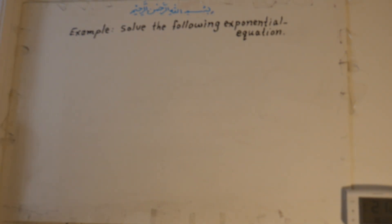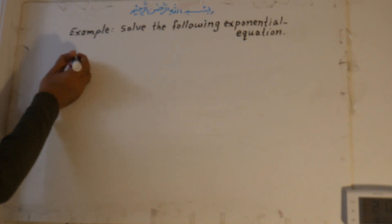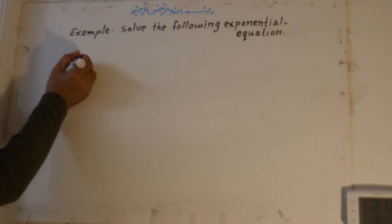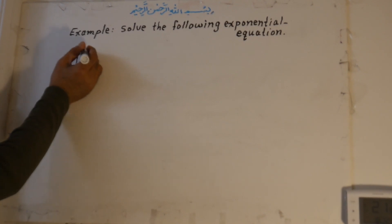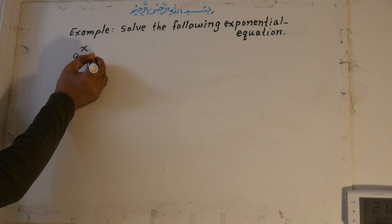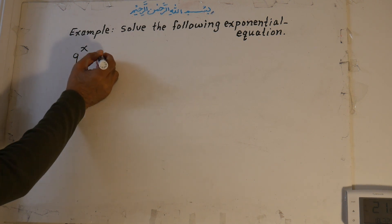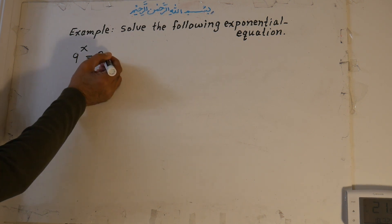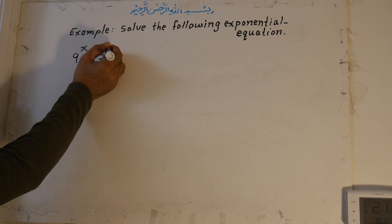Example: solve the following exponential equation. 9 to the power of x is equal to 3 to the power of x plus 2.